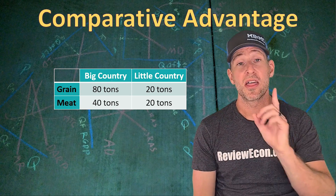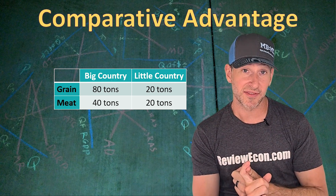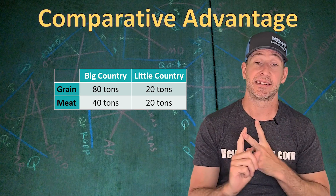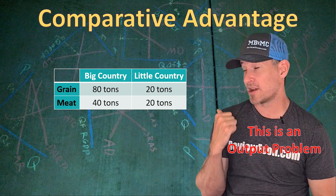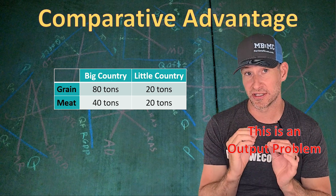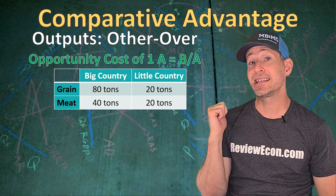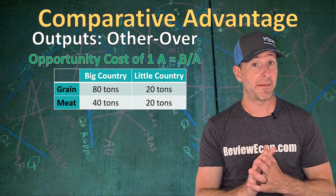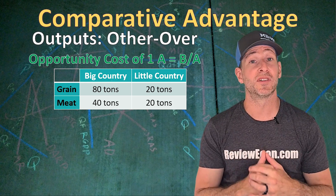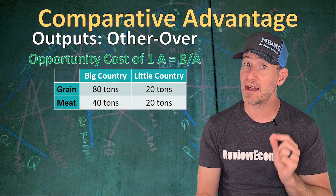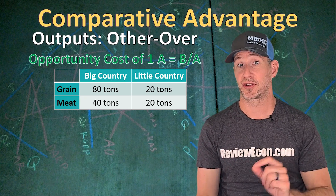The numbers in our chart are finished products — tons of grain and tons of meat — meaning this is an output problem. When it comes to output problems, the formula for opportunity cost is the 'other over' formula. That means the opportunity cost for producing one unit of good A is the numbers we have for the other one, good B, divided by the numbers we have for good A.